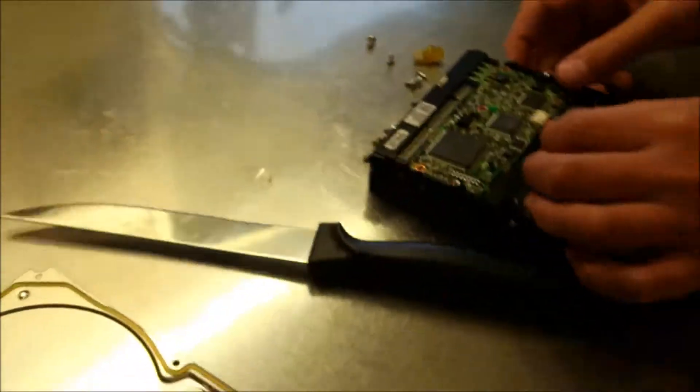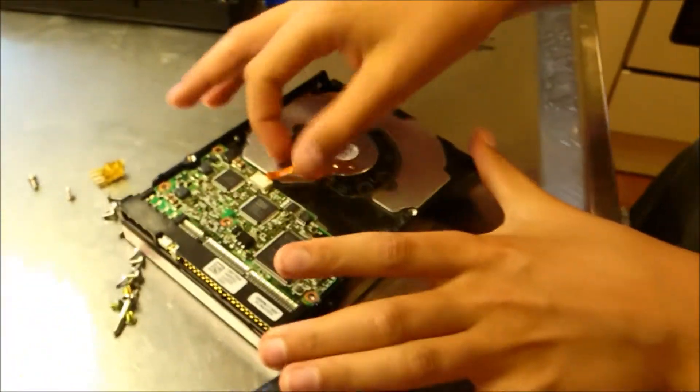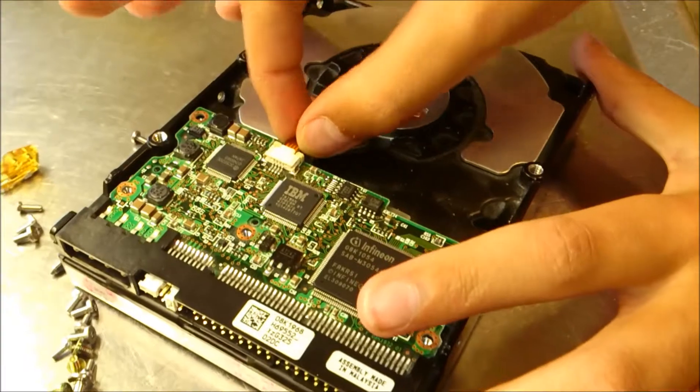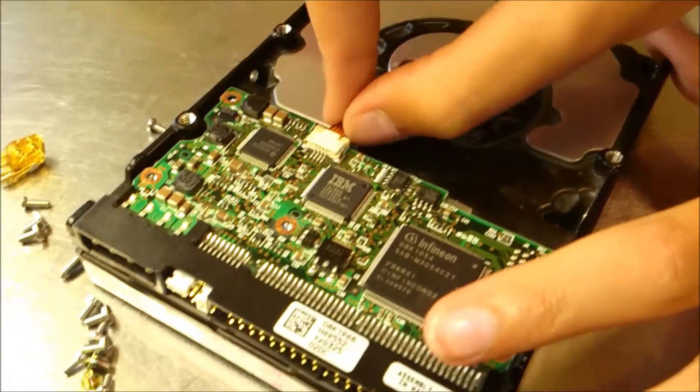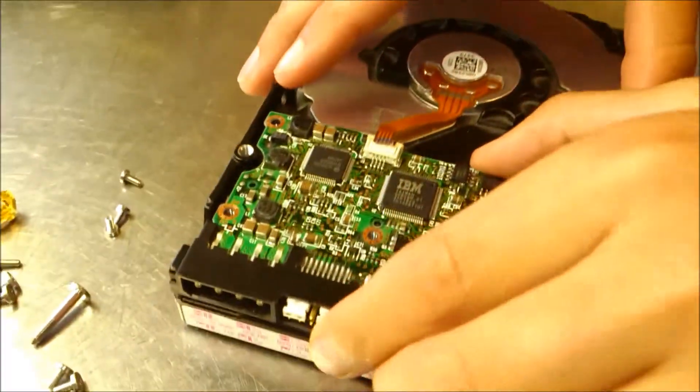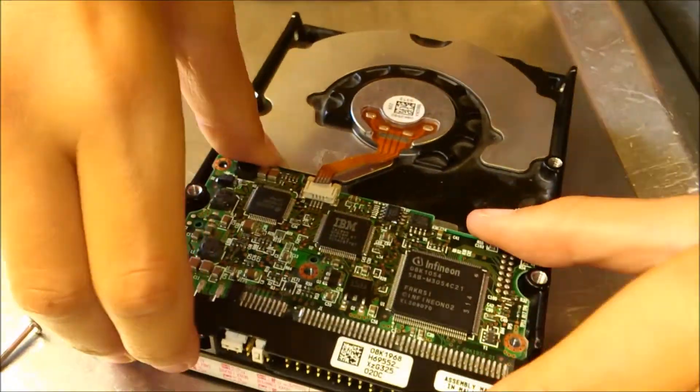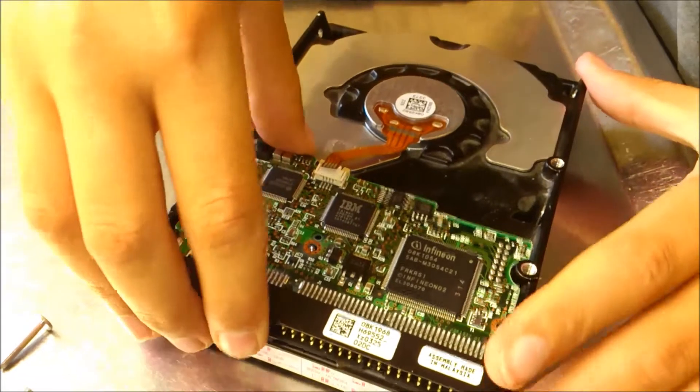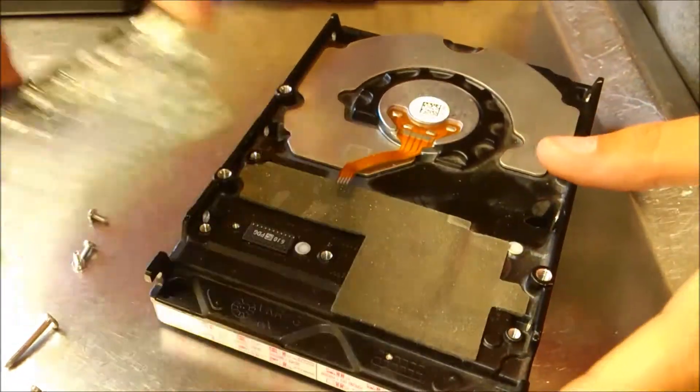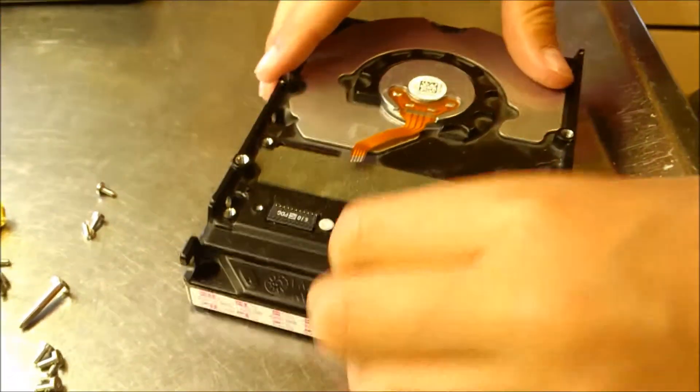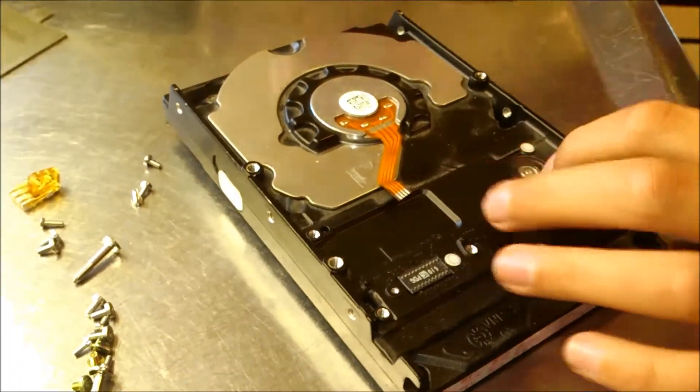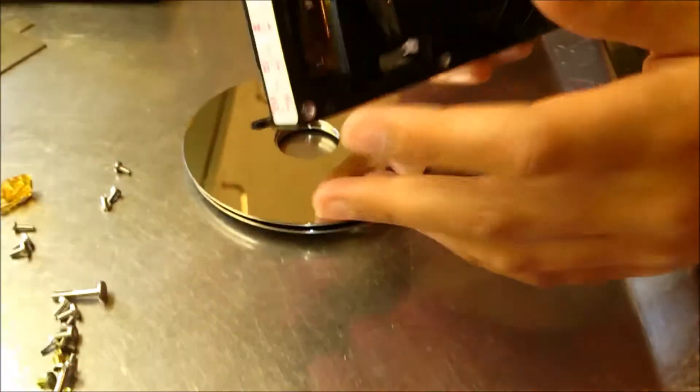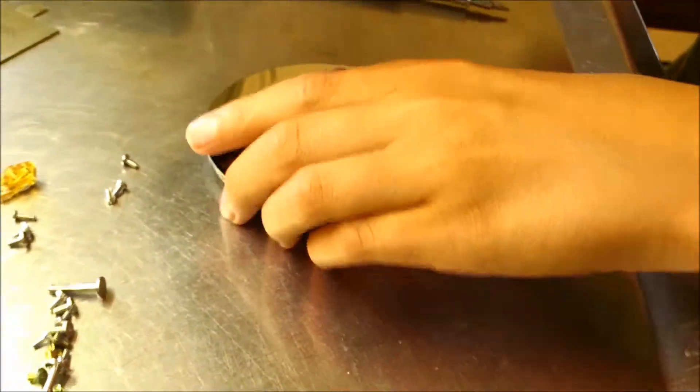And now just disconnect this thing. How do you do that? You simply wiggle it out like this. And then you should be able to get the card off like this. And then there will be more screws on the back here. These are the ones attaching these things. Now the discs fell out.